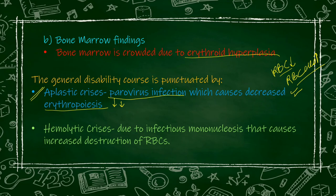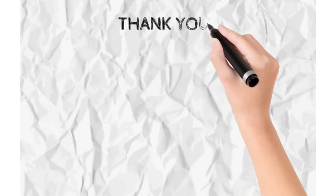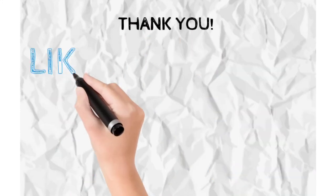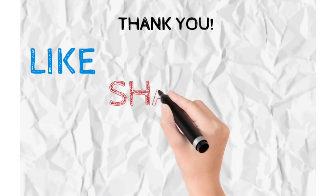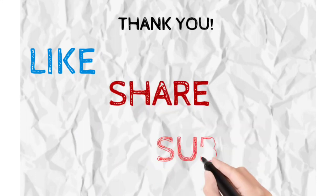Or hemolytic crisis — infections that further increase RBC destruction, such as infectious mononucleosis. With infectious mononucleosis, the RBC destruction that was already occurring increases even further. These are all the clinical features seen in hereditary spherocytosis. Thank you for watching — do like, share and subscribe, and let us know in the comment box what other topics you would like us to make videos on.